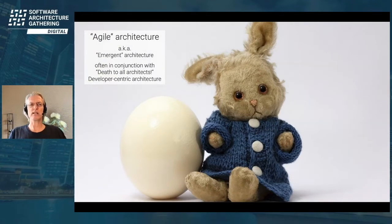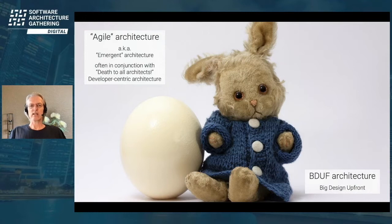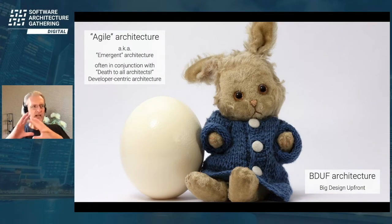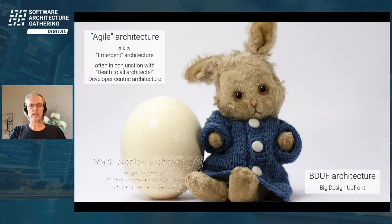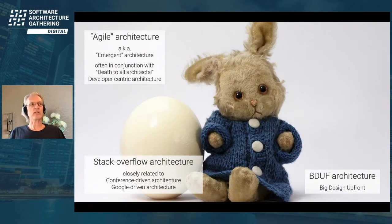For instance, you see very different things that don't fit together — people who talk about agile architecture or emergent architecture, often together with 'death to all architects' because Scrum doesn't know an architect role. There's developer-centric architecture where people just do TDD loops and architecture will automagically emerge. On the other hand, we still see leftovers from the 90s — BDUF architects who say don't touch the keyboard before I've added the last line on the last diagram I have to set up front.